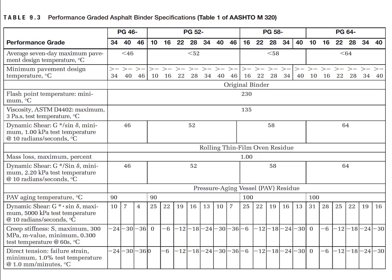After going through these tests, you should be able to understand the asphalt binder specification table in the performance grading system. This is a portion of the table showing the performance grades of the binder — the table only shows a portion of all grades — along with the corresponding parameters.